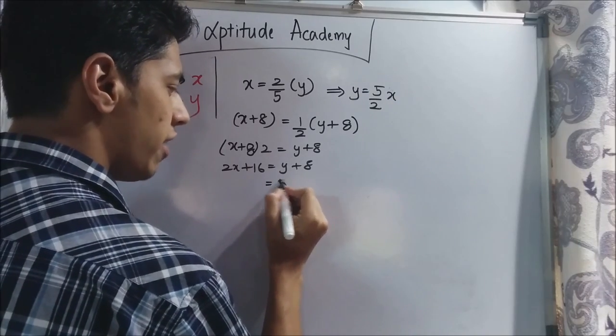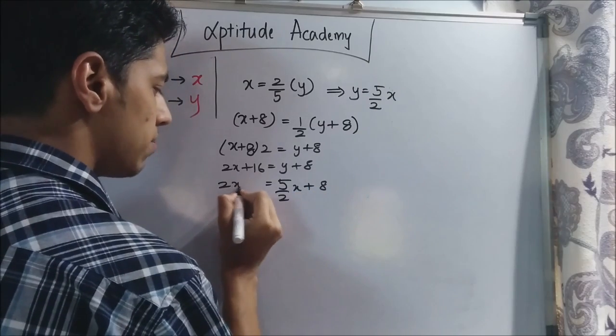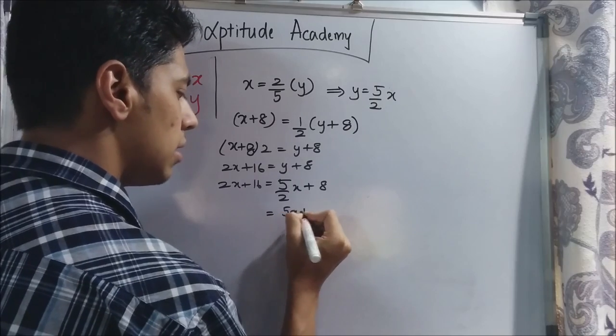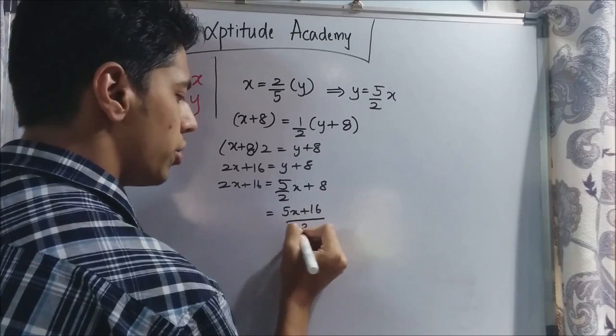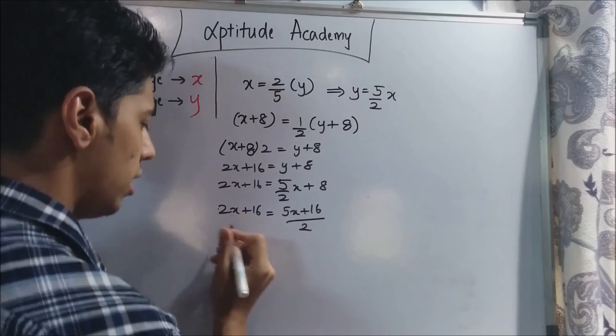So we will substitute that here. So it will be 5 by 2 x plus 8. This is 2x plus 16. Now you take an LCM here. It will be 5x plus 16 upon 2. This is 2x plus 16. Now get this 2 here and multiply.